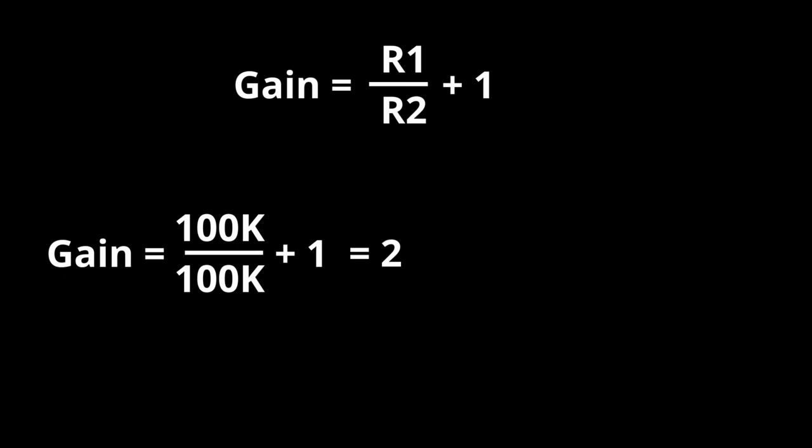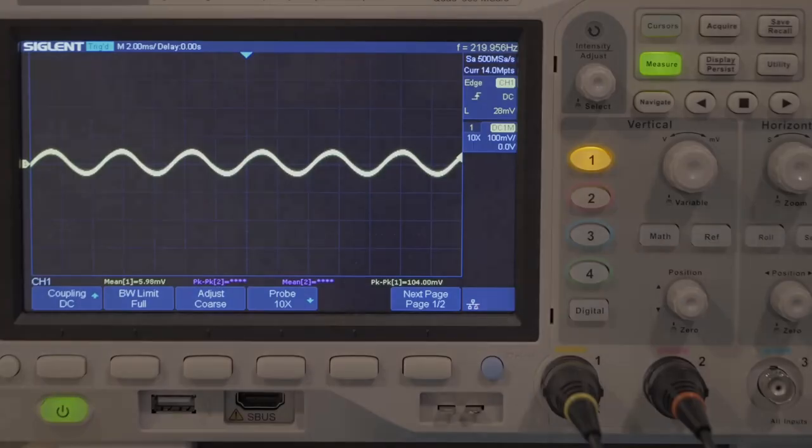In order to get closer to the 5x gain we were aiming for, let's swap out R1 with this 390 kiloohm resistor, which should give us the 5x gain we are looking for. Or at least close to it.